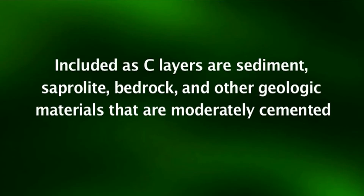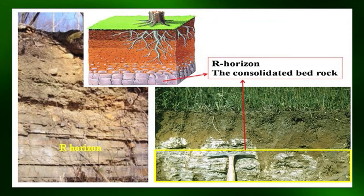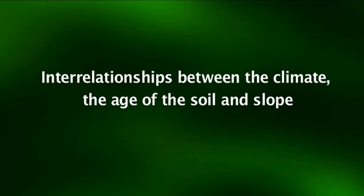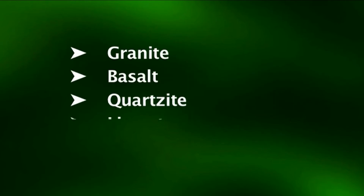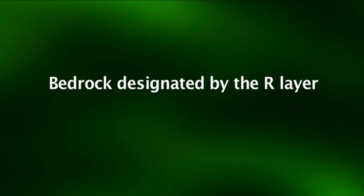Included as C layers are sediment, saprolite, bedrock, and other geologic materials that are moderately cemented. The R horizon, also called the D horizon in some soil classifications, constitutes the underlying cemented and consolidated bedrock, or sometimes the sediment from which overlying horizons have developed. The depth to the R horizon depends on the interrelationships between climate, the age of the soil, and the slope. Granite, basalt, quartzite, limestone, and sandstone are examples of bedrock designated by the R layer.